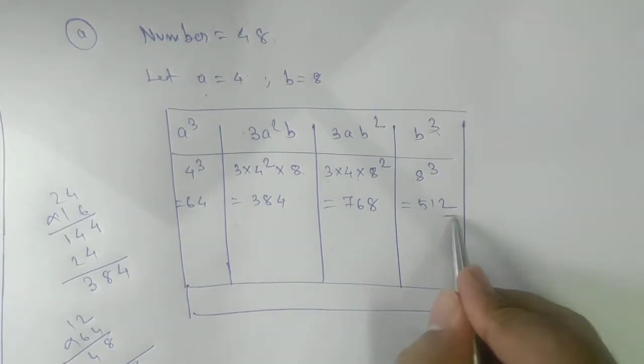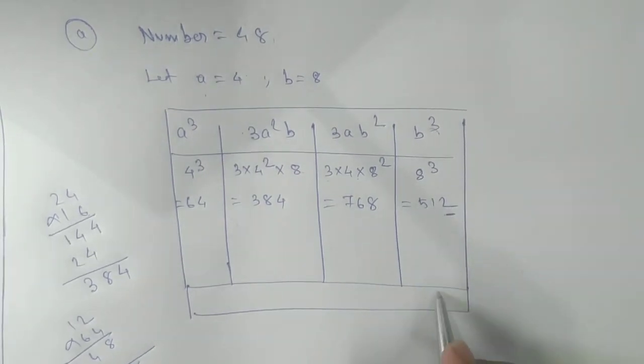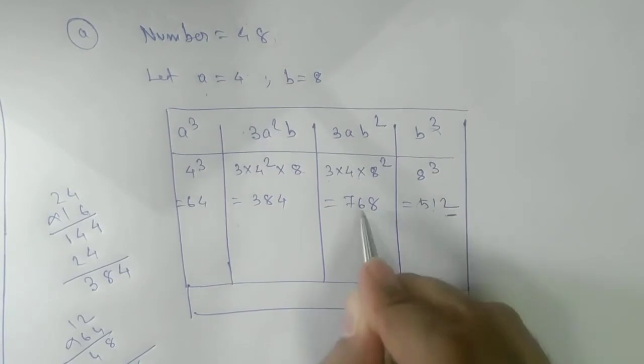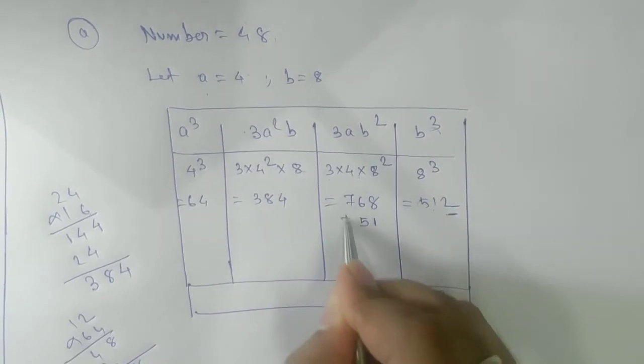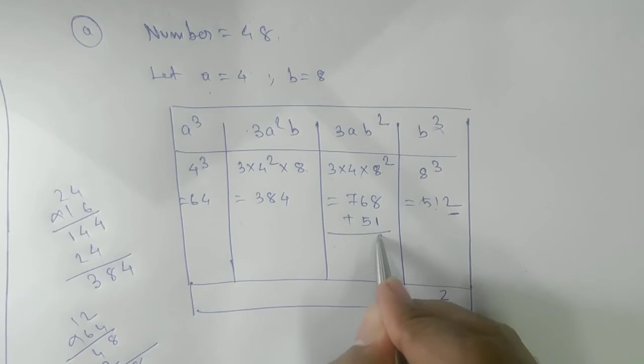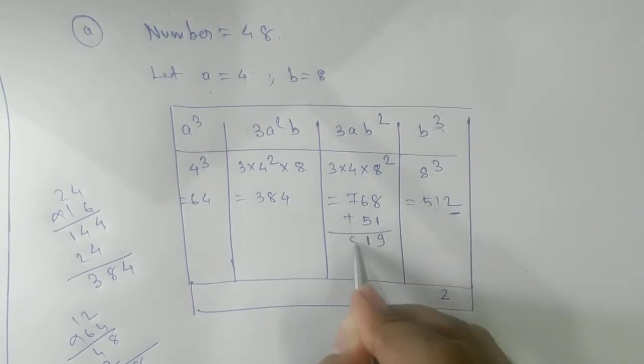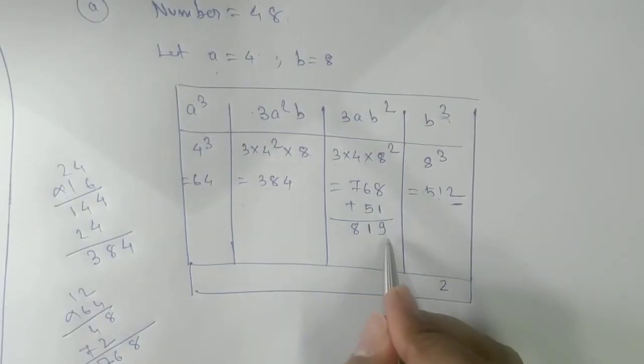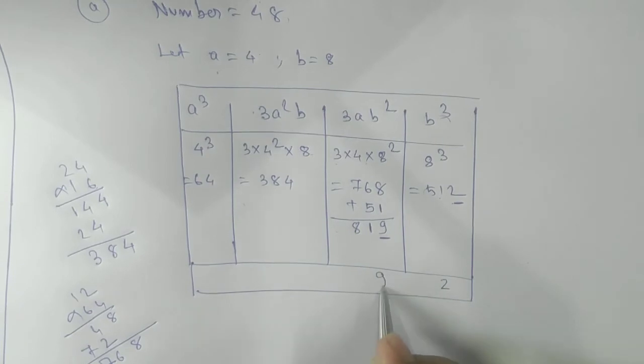Next is 512, which is 8³. The same method: we're going to take the unit number. We're going to choose here 2, rest 51 will send to this side and we'll add with the number.